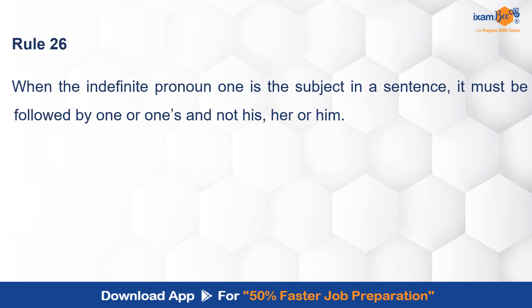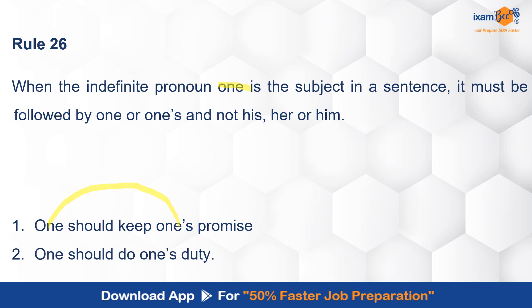Whenever 'one' — O-N-E — is the subject, you always use 'one's' with it; you do not use 'his' or 'her' or 'him.' Whenever a pronoun is needed, use 'one's.' For example: 'One should keep one's promise.' We do not say 'he should keep his promise' in this context; we say 'one should keep one's promise.' Similarly, 'One should do one's duty.' So remember this and do not make this error.